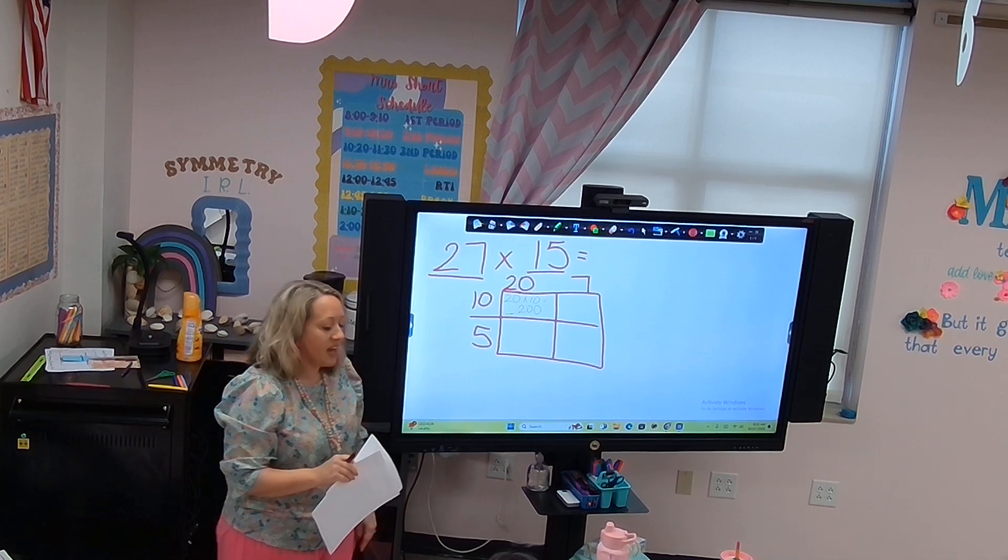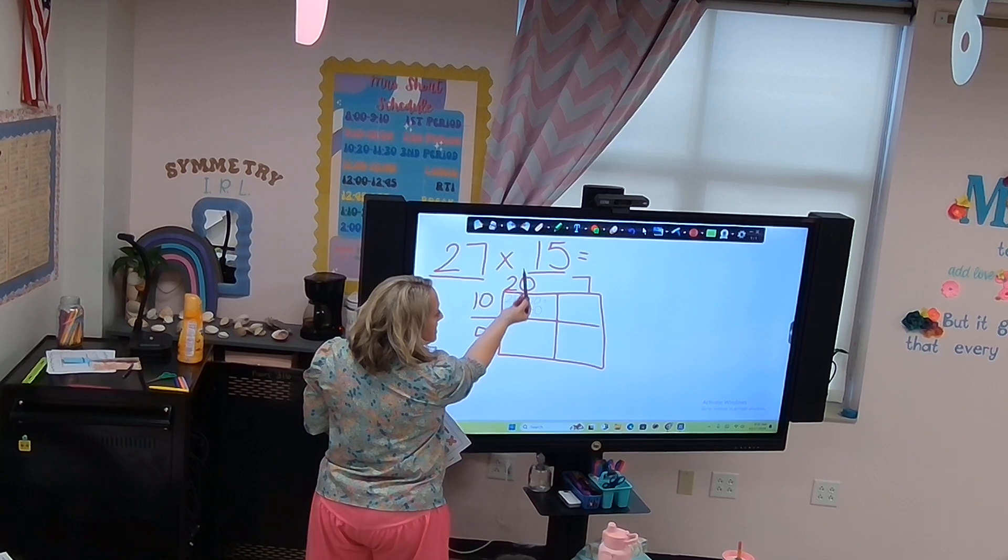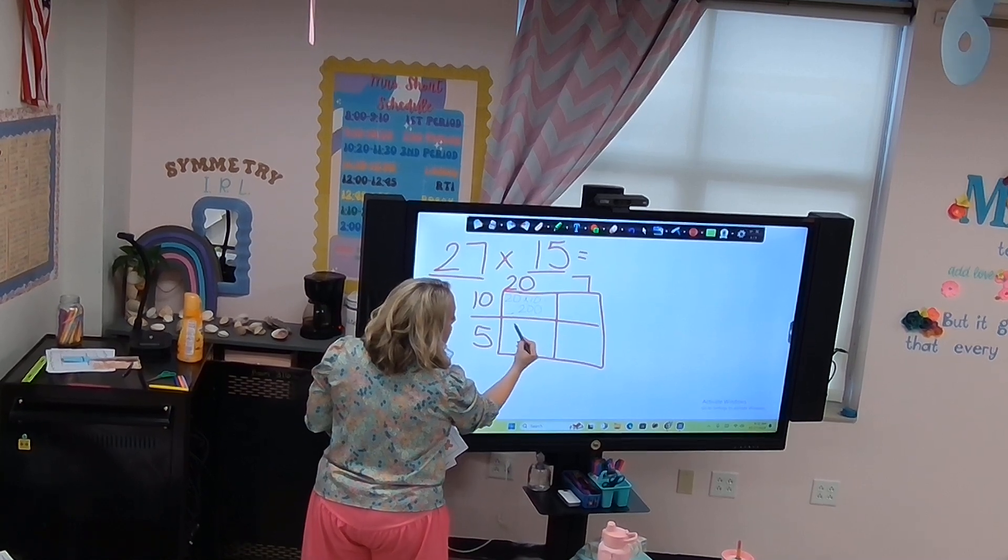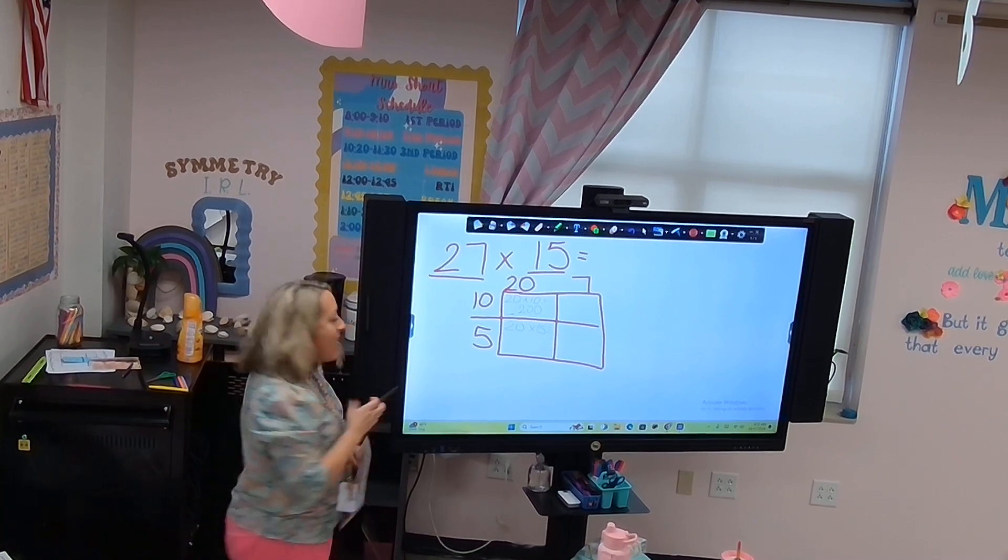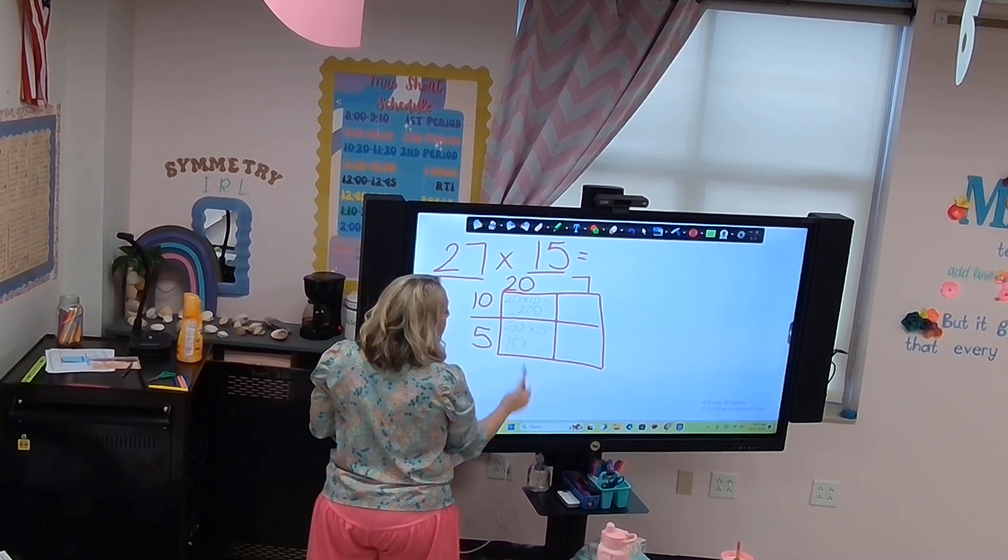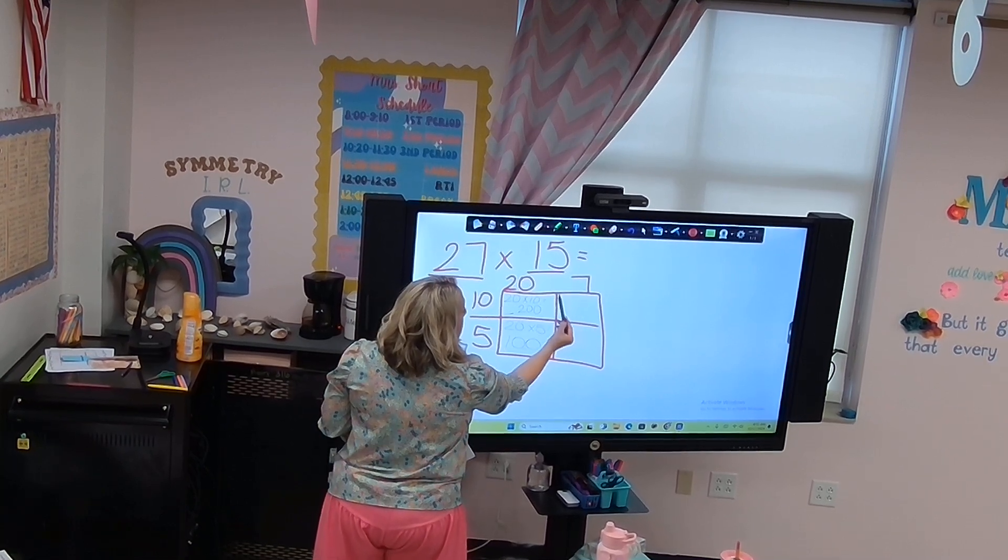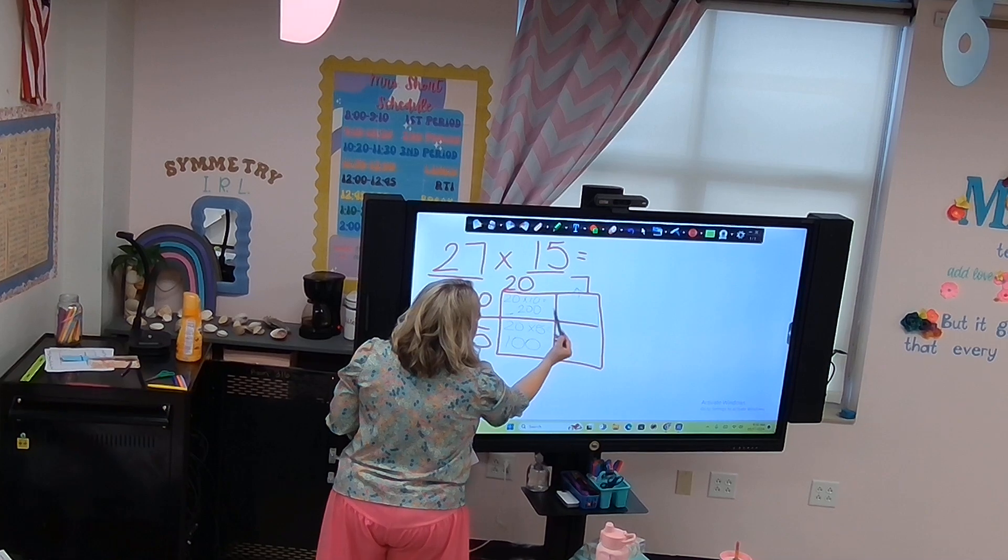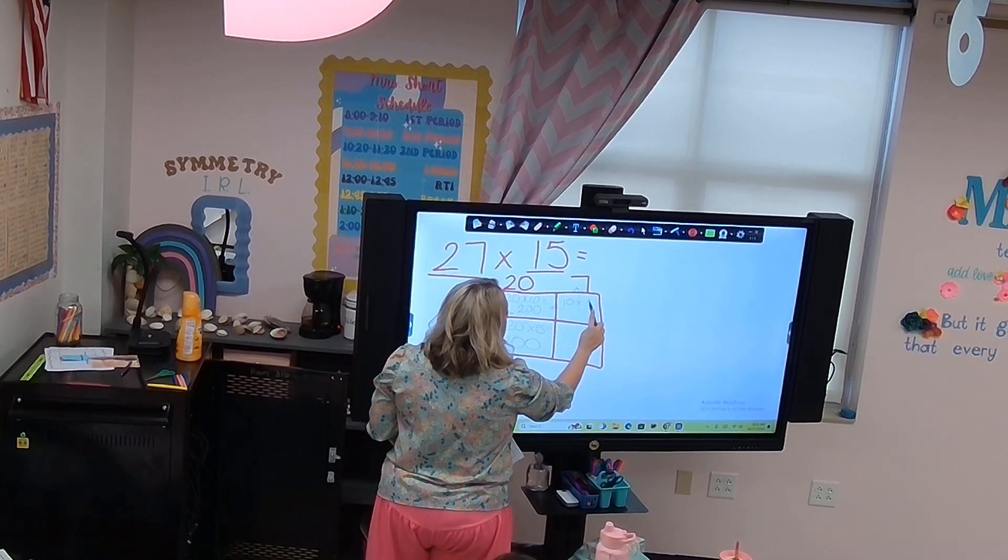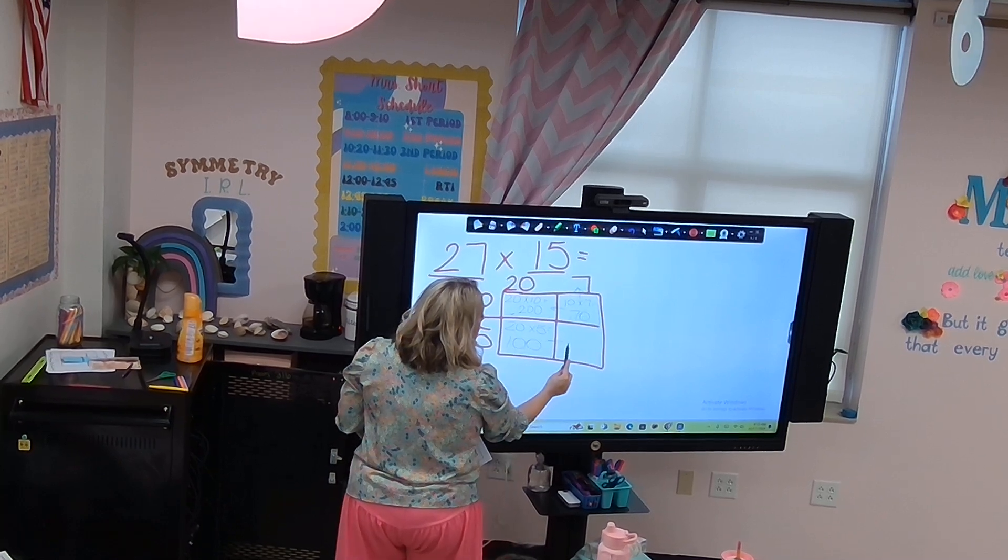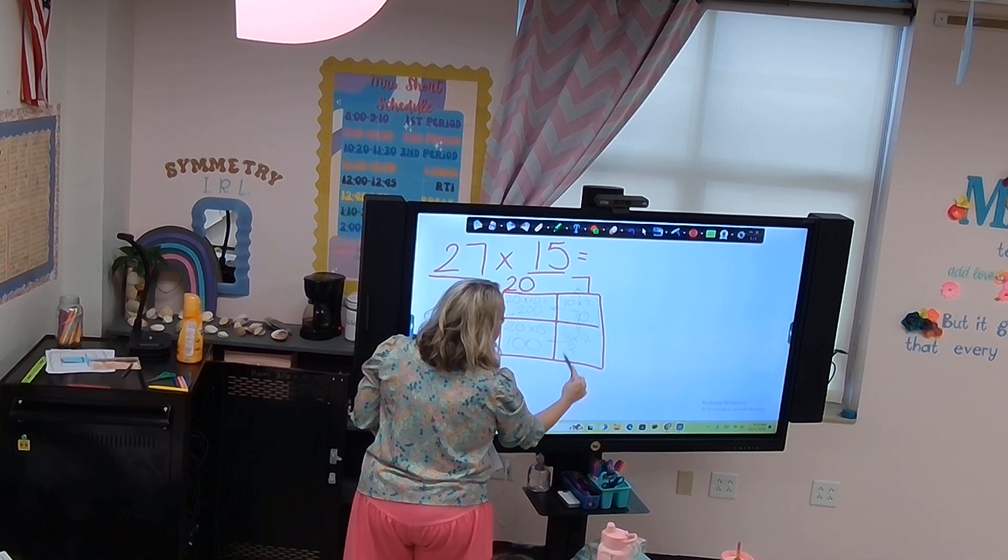Straight up is this number, straight over is this number. This one's 20 times 5. What's our basic fact here? 2 times 5. 2 times 5 is? 10. And then how many zeros? 1. Okay. For this one right here, we are going straight up, we're going straight over. 10 times 7 is? 70. Good job. Straight over, straight up. 5 times 7. 35.